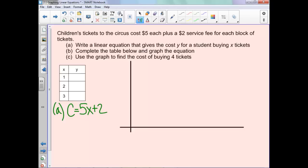Now we can use our equation to complete this table. If we sell 1 ticket, we'll have 5 times 1, which is 5, plus 2, so it'll cost us $7. If we sold 2 tickets, that'll be 10 plus 2, which is 12. And if we sold 3 tickets, it'd be 15 plus 2, so $17.